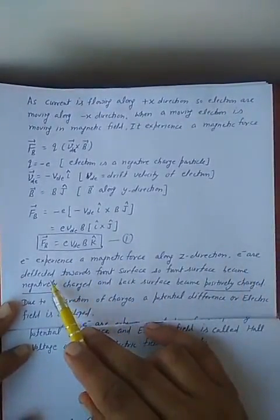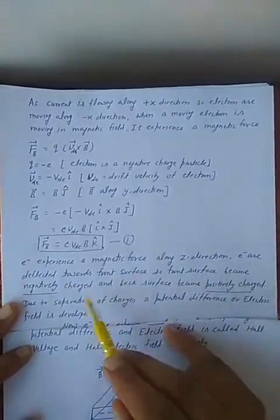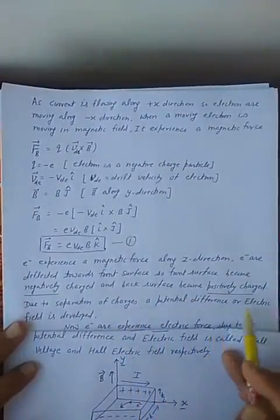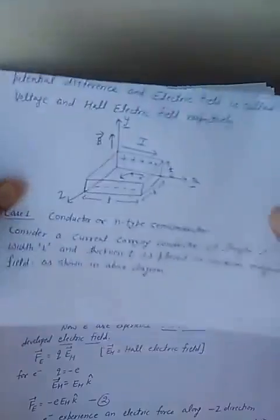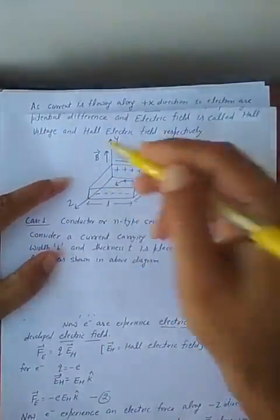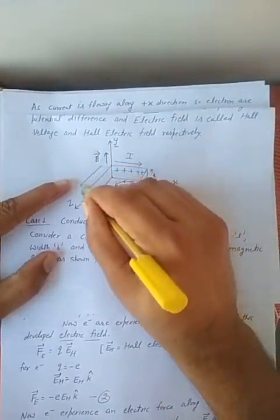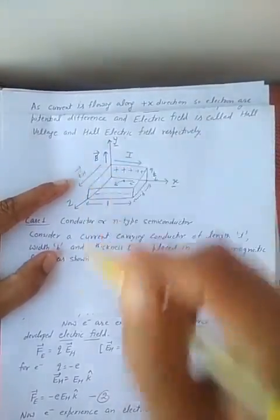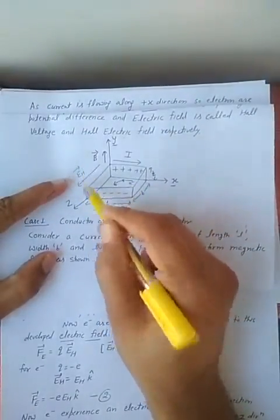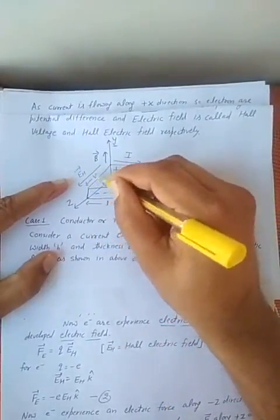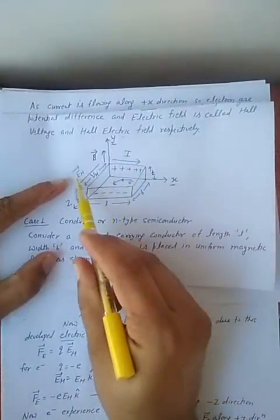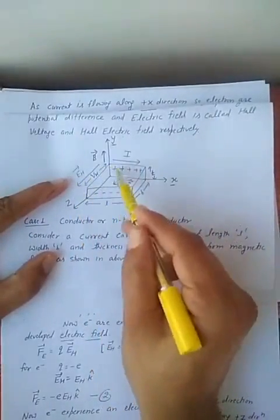Electrons are deflected towards the front surface. So the front surface becomes negatively charged and the back surface becomes positively charged. Due to this separation of charge, a potential difference and electric field are developed. Now the electrons experience an electric force due to the developed electric field. From the positive to the negative side, one electric field — the Hall electric field E_H — is developed, and the corresponding Hall voltage V_H is also developed.